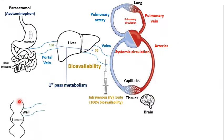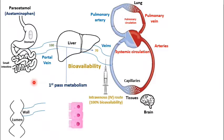Here is the vein that drains blood from the GIT, which we call the portal vein. Our drug is now dissolved in the lumen, in the GIT fluids. To reach the portal vein, it must pass through the walls of the small intestine. This wall is made up of cells called mucosal cells, so our drug in the lumen must pass through these mucosal cells to reach the blood in the portal vein.